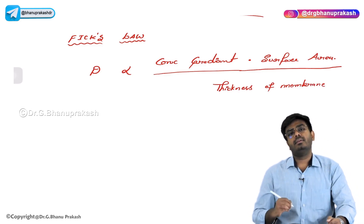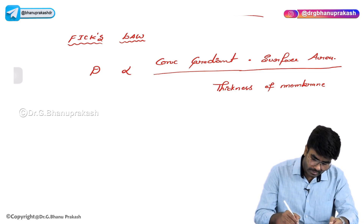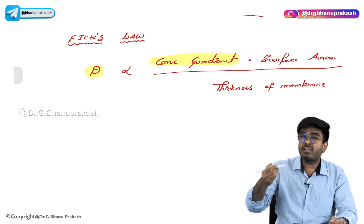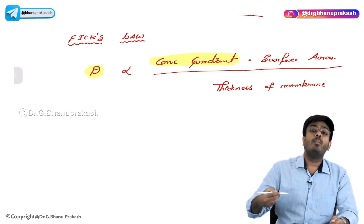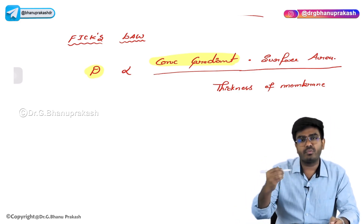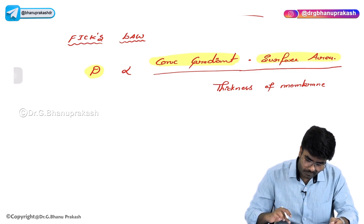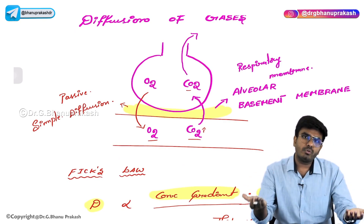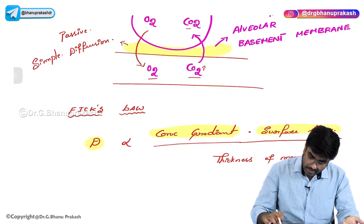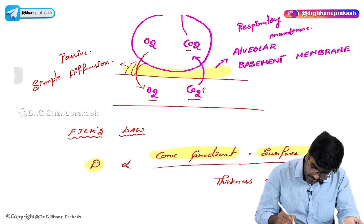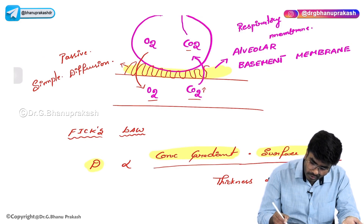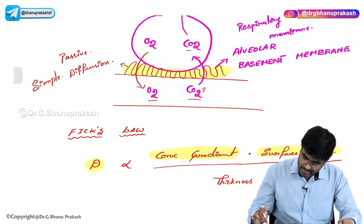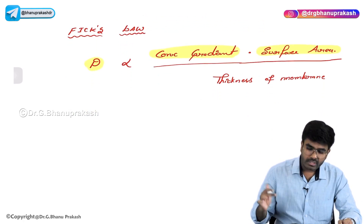It's very simple. Diffusion is directly proportional to concentration gradient - meaning if there is more partial pressure difference, diffusion will happen more easily and more rapidly. If the surface area is more, if the alveolar surface area is more, more diffusion of gases will happen. But if the membrane thickness is more, if this membrane becomes fibrotic, it will act as an impedance factor for the diffusion of gases. So thickness is inversely proportional to diffusion of gases.